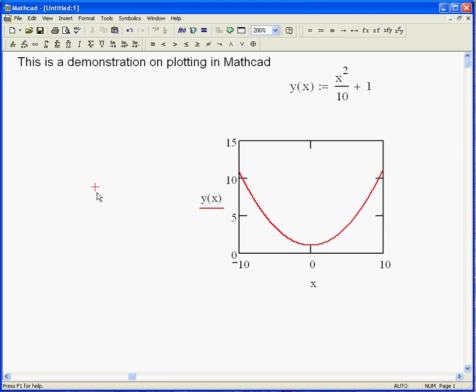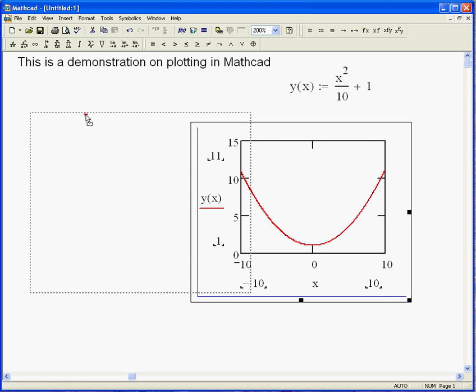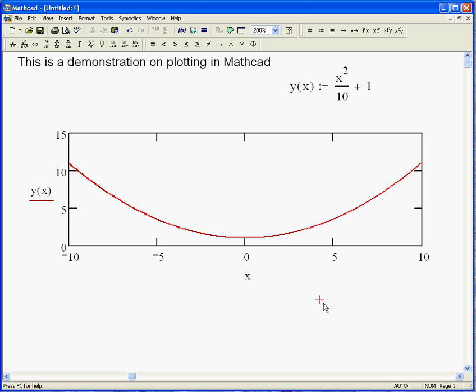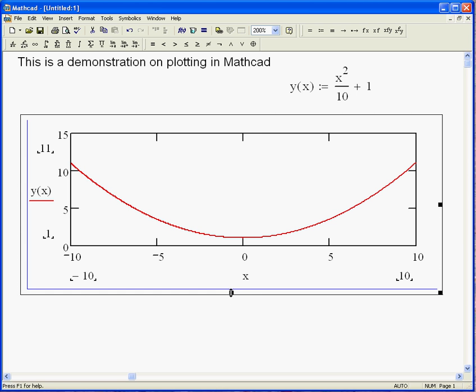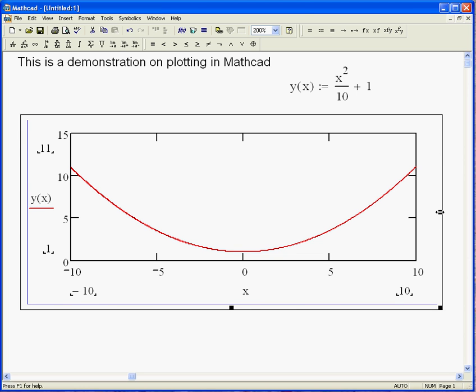Now I've defined Y of X, so it's going to know what to do. And there it is. Now MathCAD has made a couple of assumptions. It's guessed at what I want the range of the X variable to be because I didn't tell it, and it's guessed at how many points to put on the plot. When you click on a plot, a couple of things become apparent. There's three black boxes here.